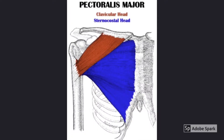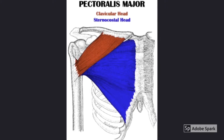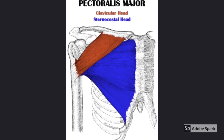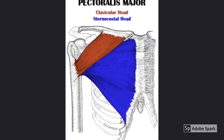The pectoralis major muscle has two heads: the clavicular head and the sternocostal head. The clavicular head is innervated by the lateral pectoral nerve, and the sternocostal head is innervated by the medial and lateral pectoral nerve.